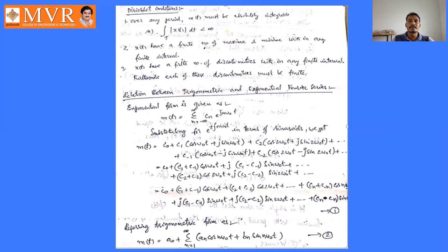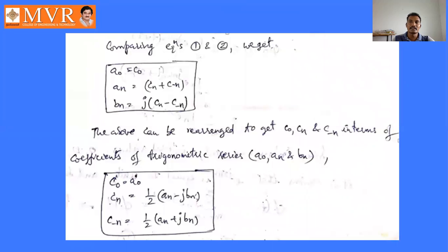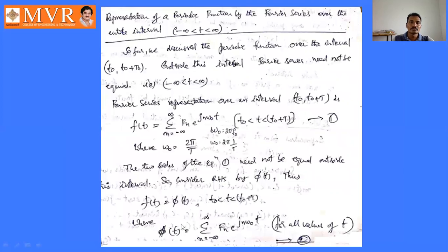Next, we will see the relation between the trigonometric and exponential Fourier series. The relationships are: a₀ = c₀; aₙ = cₙ + c₋ₙ; bₙ = j(cₙ - c₋ₙ). Conversely, we can express the exponential Fourier coefficients in terms of the trigonometric ones as: c₀ = a₀; cₙ = ½(aₙ - jbₙ); c₋ₙ = ½(aₙ + jbₙ).